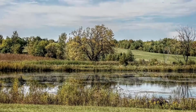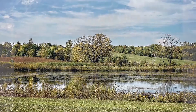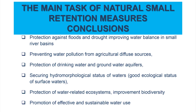During this lecture, we have tried to show that small water retention is a proper method for improving water balance and should be an important part of water management plans in river basins. The role of small retention measures in the environment is very important — they help in protection against floods and drought, improving water balance in small river basins, preventing water pollution from agricultural diffuse sources, protecting draining water and groundwater aquifers, securing hydromorphological status of water, good ecological status of surface water, protection of water-related ecosystems, improving biodiversity, promoting effective and sustainable water use, and adjusting the economy to global climate change.